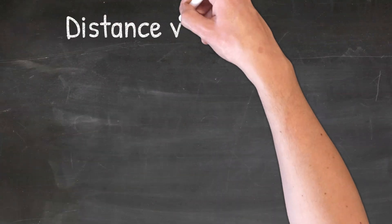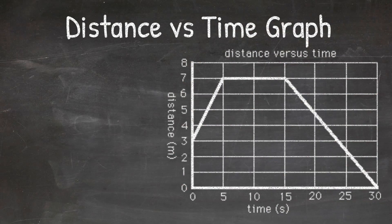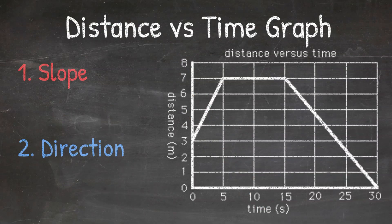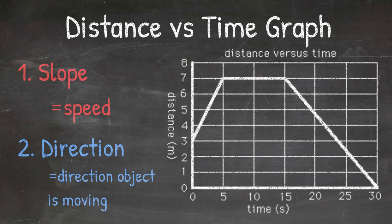When looking at a distance versus time motion graph, there are two things that are important to consider. They are the slope of the line and the direction of the line. The slope of the line will tell you the speed of the object, while the direction of the line will tell you the direction the object is moving. Let's look at both of these in more detail.